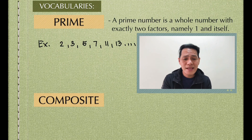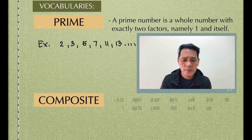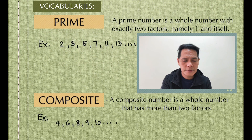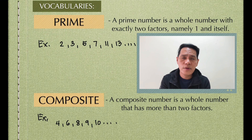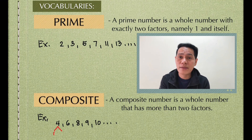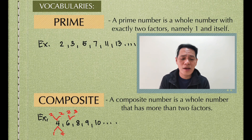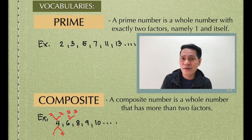Next is composite. When we say composite, a composite number is a whole number that has more than two factors. For example, 4, 6, 8, 9, 10, and so on. Let's investigate 4: we have 1 and itself, but also 2 and 2, since 2 times 2 equals 4. For 6, you also have 2 and 3. For 8, 9, and 10, there are other factors aside from 1 and itself. In that case, we call them composite.